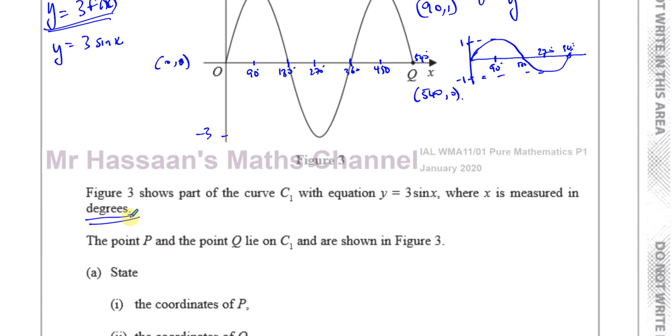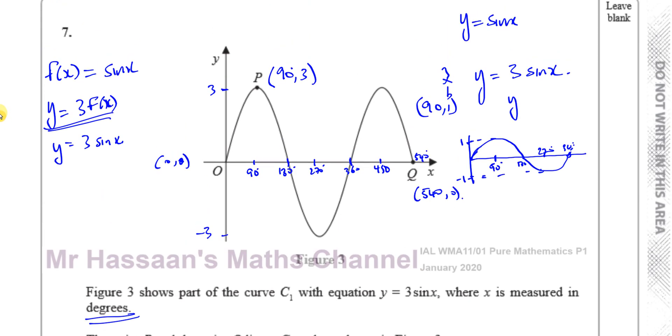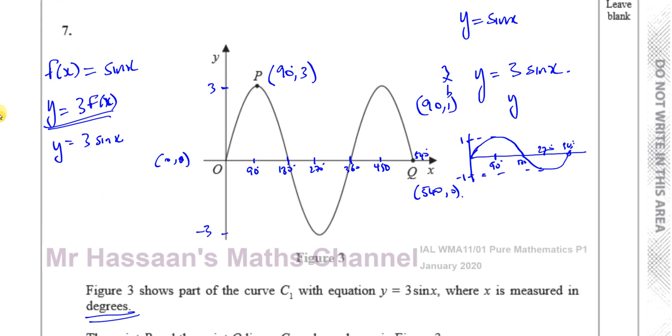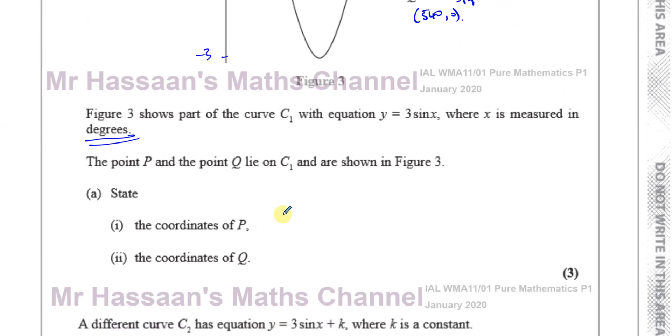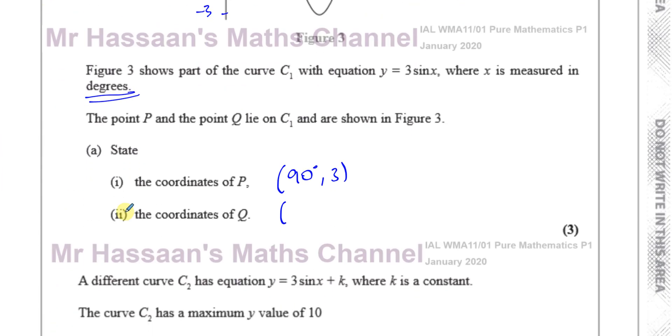We said degrees, so that's why we use degrees. If it said radians, we'd have to use radians. So P is (90, 3) - 90 degrees on the x and 3 on the y. And the coordinates of Q are 540 and 0. So that's part A, pretty simple.